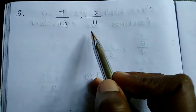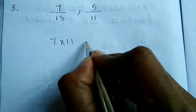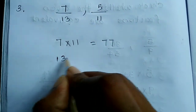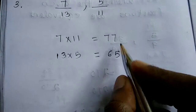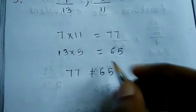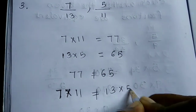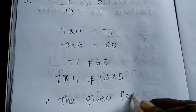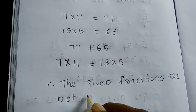Check 7 by 13 and 5 by 11. Cross multiply: 7 into 11 equals 77, and 13 into 5 equals 65. Since 77 is not equal to 65, the given fractions are not equivalent.